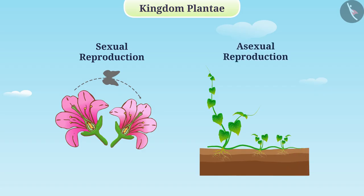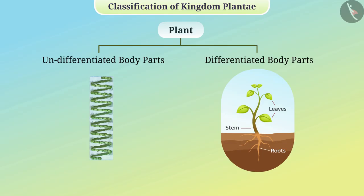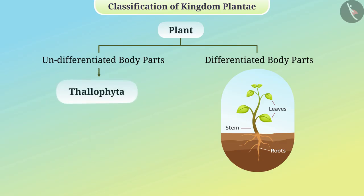The first level of classification of kingdom Plantae is based on whether the major body parts of the plant are fully developed or differentiated. Plants whose bodies are without differentiation are placed in the subclass Thallophyta.